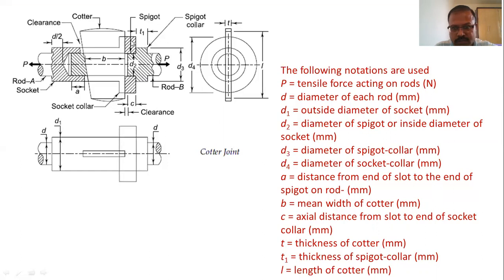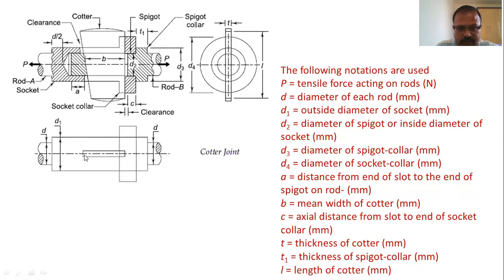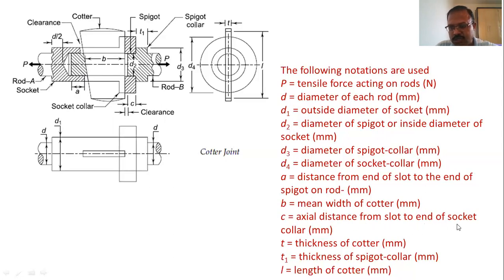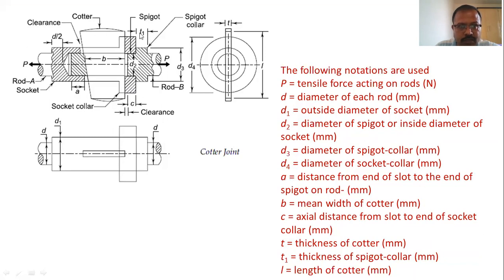d3 is the diameter of spigot collar, d4 is the diameter of socket collar. The dimension 'a' is the distance of the end of the slot from the spigot end — from here to here it is distance a. 'b' is the mean width of cotter; we talk about mean width because the cotter is tapered on one side and straight on the other, so width at the top is more and at the bottom is less. 'c' is the axial distance from the slot to the end of socket collar, and 't' is the thickness of the cotter.